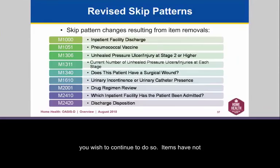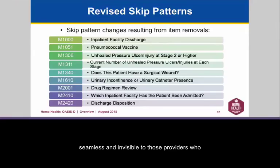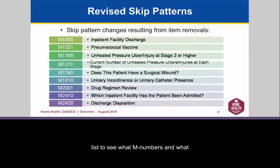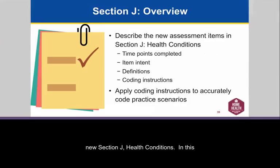We are aware that many providers use the current reason for emergent care as internal data collection for performance improvement purposes. You will need to find an alternative method to collect this data if you wish to continue to do so. Items have not only been changed or removed — in some cases, skip patterns have changed due to those removed items. Skip pattern changes are most often seamless and invisible for providers using electronic medical records, but those still on paper entering into HAVEN will need to be more cognizant of these changes to avoid inadvertent errors.